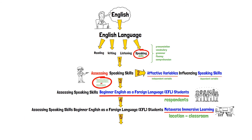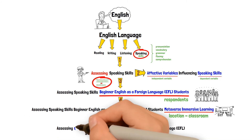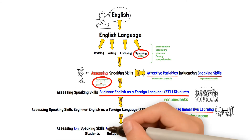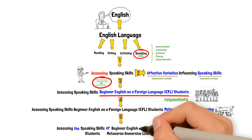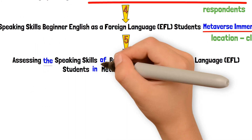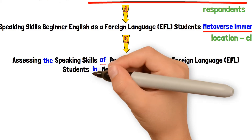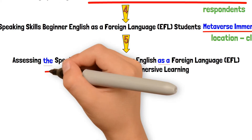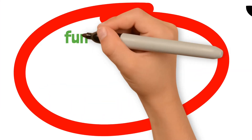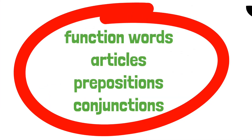5. Use function words. These function words are prepositions, articles, and conjunctions that connect the content words. Capitalize the first letter of proper nouns and content words, but do not capitalize common nouns and function words.